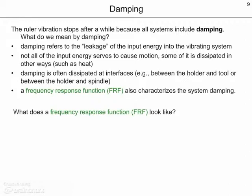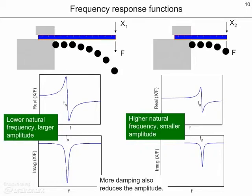So what does a frequency response function look like? Our long flexible ruler is shown on the left. Beneath it are the real and imaginary parts of its frequency response function, where real and imaginary do not indicate existence or non-existence — they're just names for the parts of the frequency response function. On the right, we see the shorter, stiffer ruler and its frequency response function shown below it. The difference is that the shorter ruler has a higher natural frequency and a smaller amplitude because it is stiffer. More damping would also reduce the amplitude. In measured frequency response functions, multiple natural frequencies will give multiple peaks.